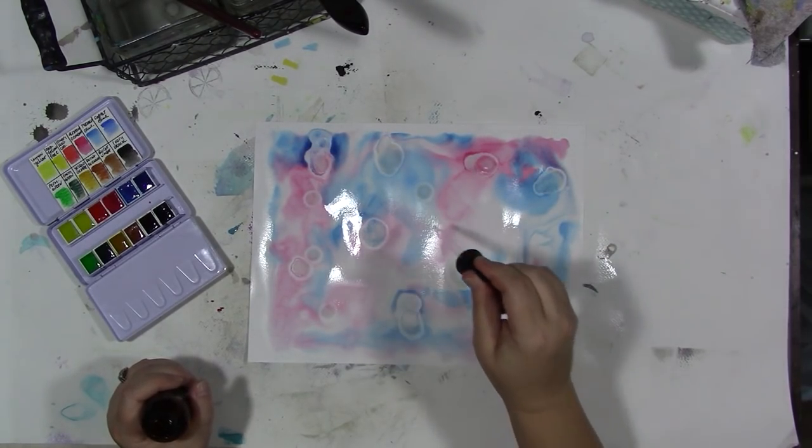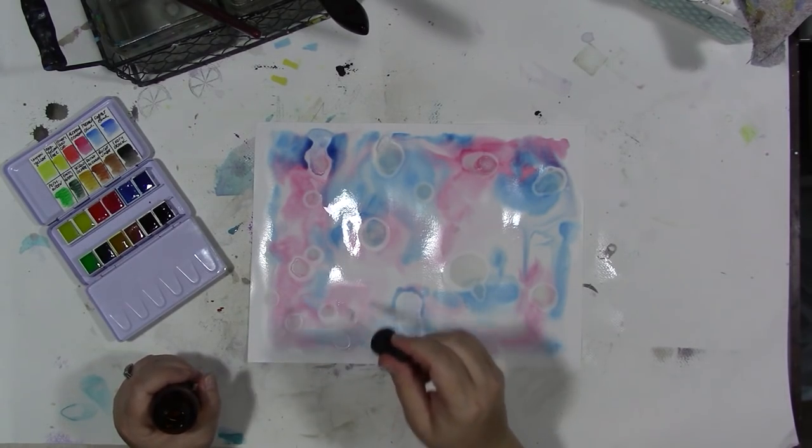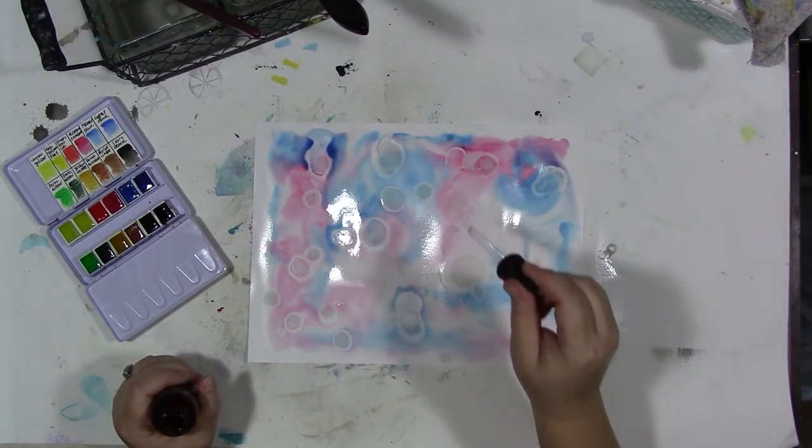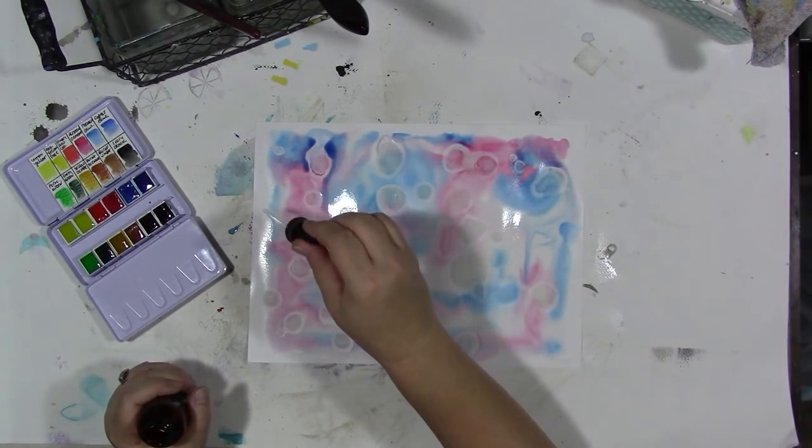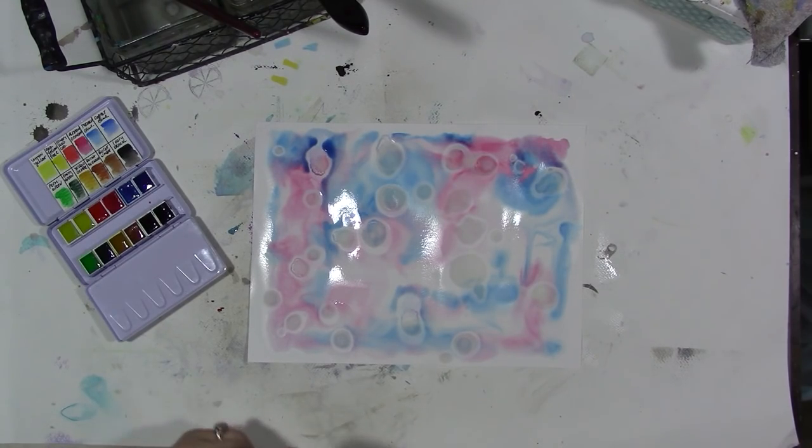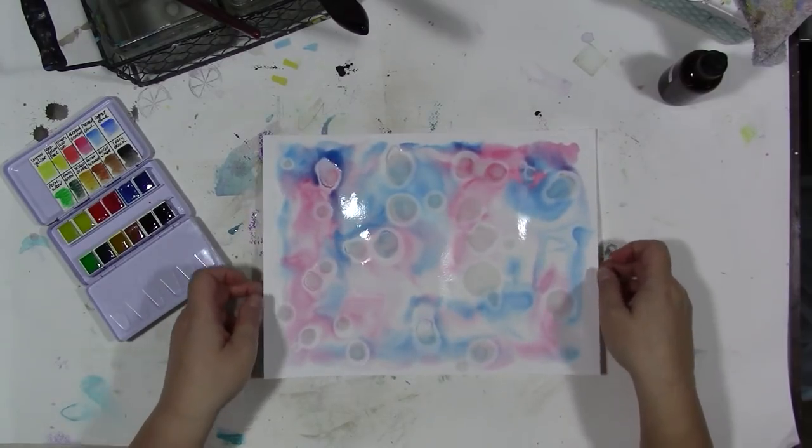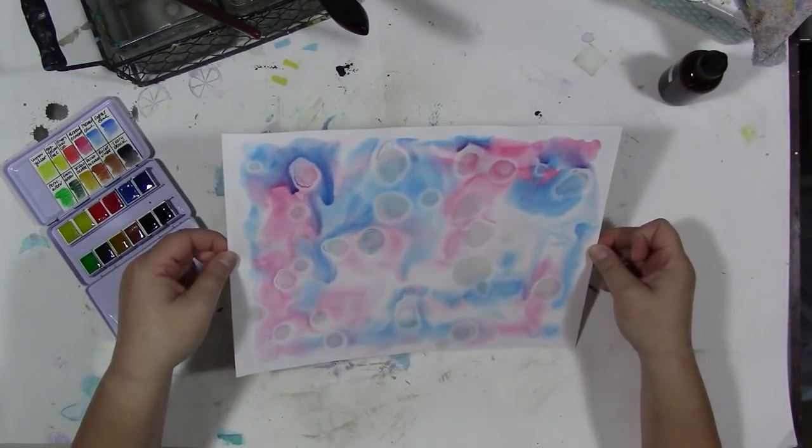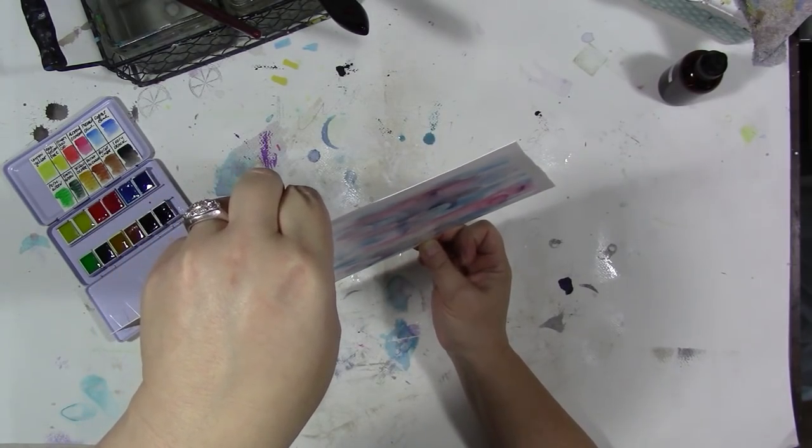Now if it still warps a little bit, that's okay. You can put it under something heavy, or you can iron it. Yes, I said iron it. Put it between some clean paper like packing paper, something thin, and then iron it with your iron. You'll get something that's nice and flat and good for scanning.